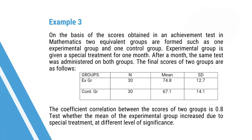Let us consider an example. On the basis of scores in an achievement test in mathematics, two equivalent groups — one experimental and one control — are formed. The experimental group is given special training for one month. After a month the same test is administered to both groups. The experimental group has n=30, mean=74.8, SD=12.7; the control group has n=30, mean=67.1, SD=14.1. The coefficient of correlation between the two groups' scores is 0.8.